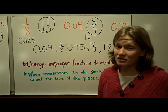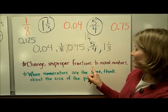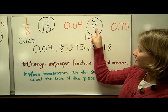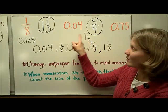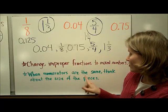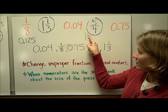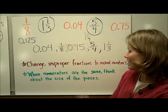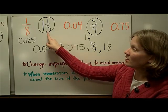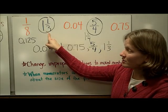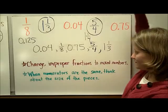The strategies I used to solve this one: change improper fractions to mixed numbers — they're easier to deal with and compare. And when numerators are the same, think about the size of the pieces: a smaller denominator means a bigger piece.